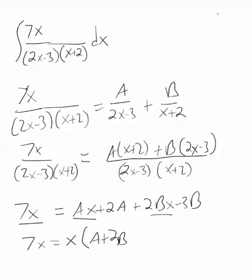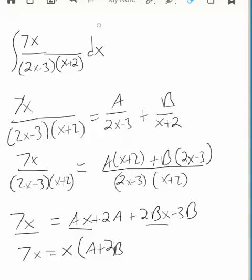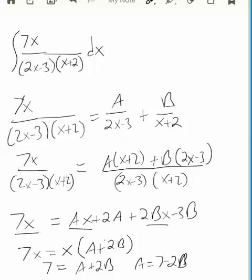So 7x equals x times A plus 2B. Let me just fix that real quick. A plus 2B. And so that means 7 must equal A plus 2B, or A equals 7 minus 2B. There's my A in terms of B.